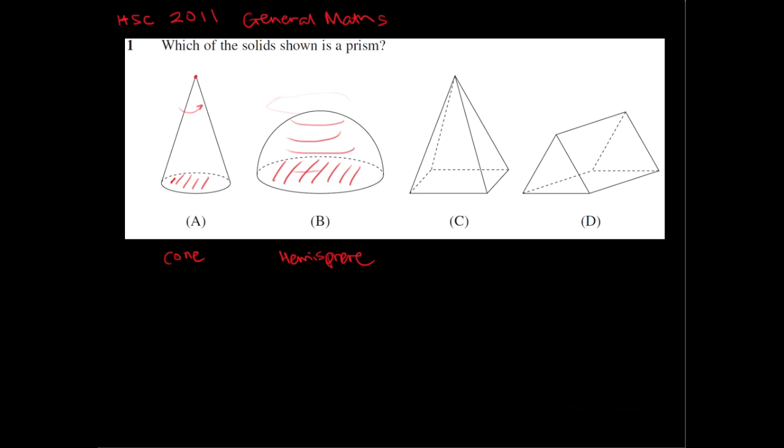And C, C is a pyramid. It has a point, it has a square base, so it's not a prism. So I'm going to call it a square-based pyramid.